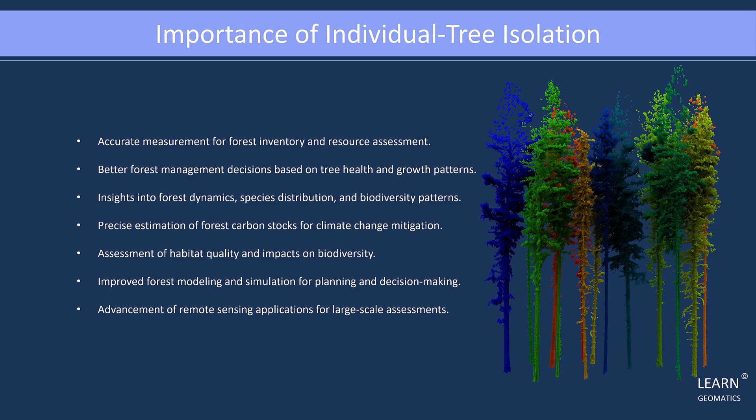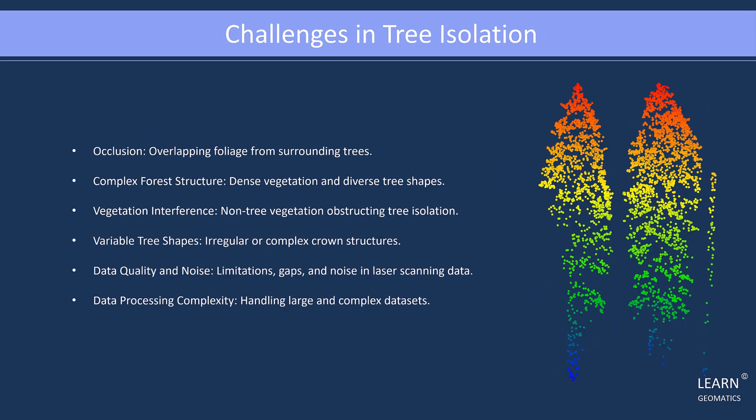Moving on, let's discuss the challenges related to tree isolation when using 3D point cloud data. One of the main challenges is occlusion, where overlapping foliage from surrounding trees obstructs the isolation of individual trees. The complex forest structure, with dense vegetation and diverse tree shapes, adds further complexity. Non-tree vegetation can also interfere with tree isolation.